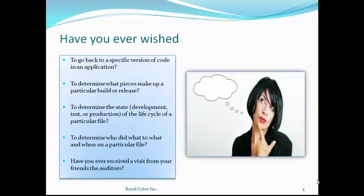You might wish for certain things during an application lifecycle. For example, how about going back to a specific version of code and an application, to determine what pieces make up a particular build or release, to determine who did what, to what and when on a particular file, and to determine the state — for example development, test or production — of the lifecycle of a particular file.